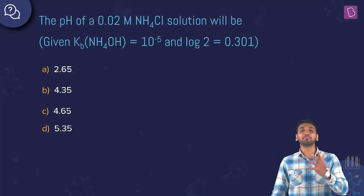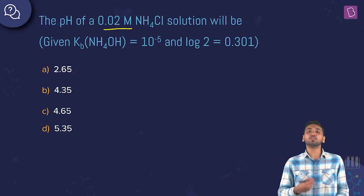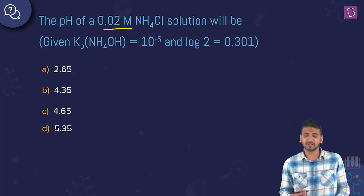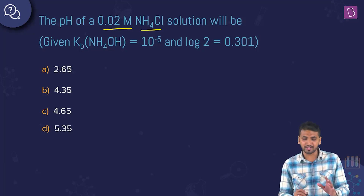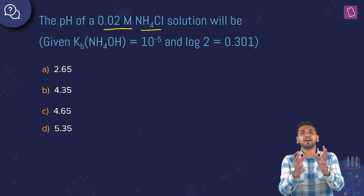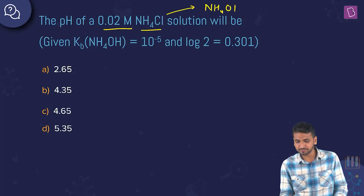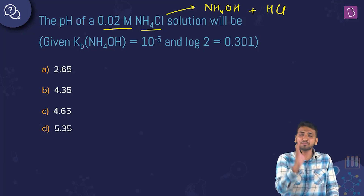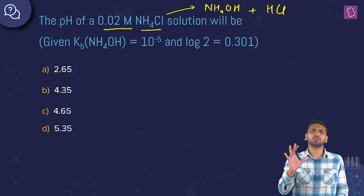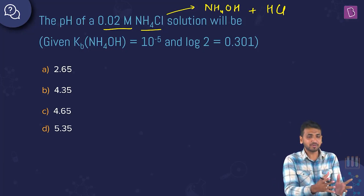Here we have a question on hydrolysis and pH calculation. The pH of a 0.02 molar ammonium chloride solution is asked, given Kb of NH₄OH = 10⁻⁵ and log 2 = 0.301. Ammonium chloride is a combination of a weak base (NH₄OH) and a strong acid (HCl) — it is a salt of a weak base and strong acid.